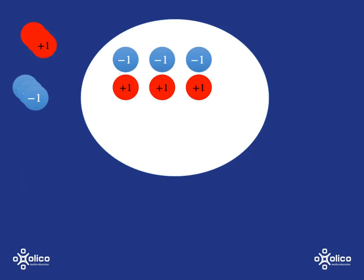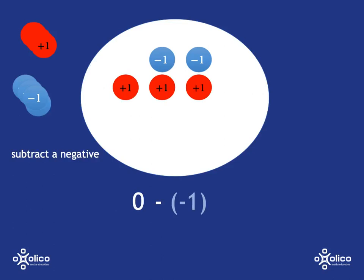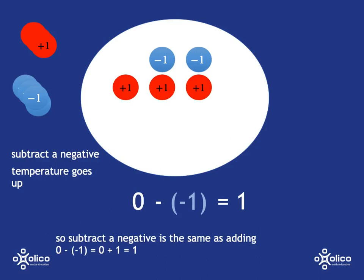Now this is the one that gets really interesting. We're at zero, and this time we're going to take out a cold disk — subtract a negative. If we take some cold out of the pot, what is going to happen to the temperature? Obviously the temperature is going to go up, and so we will end up at one. Subtracting a negative — taking out some of the cold — is the same as adding.